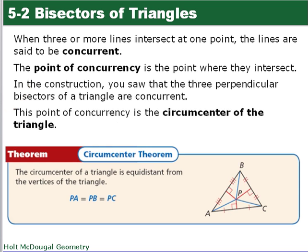A few vocabulary words. When three or more lines intersect at one point, the lines are said to be concurrent. The point of concurrency is the point where the three lines intersect — also called the point of intersection.